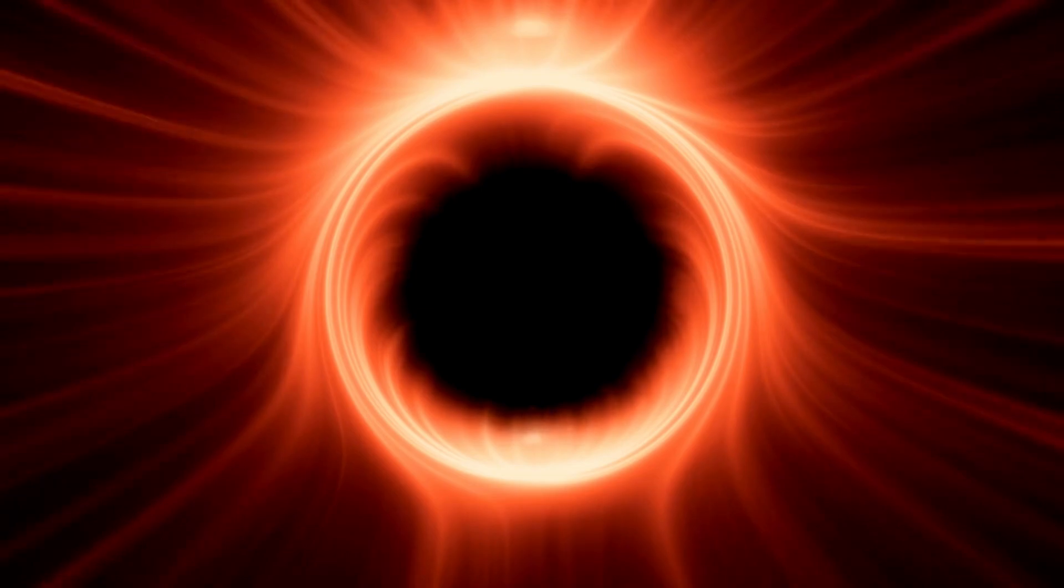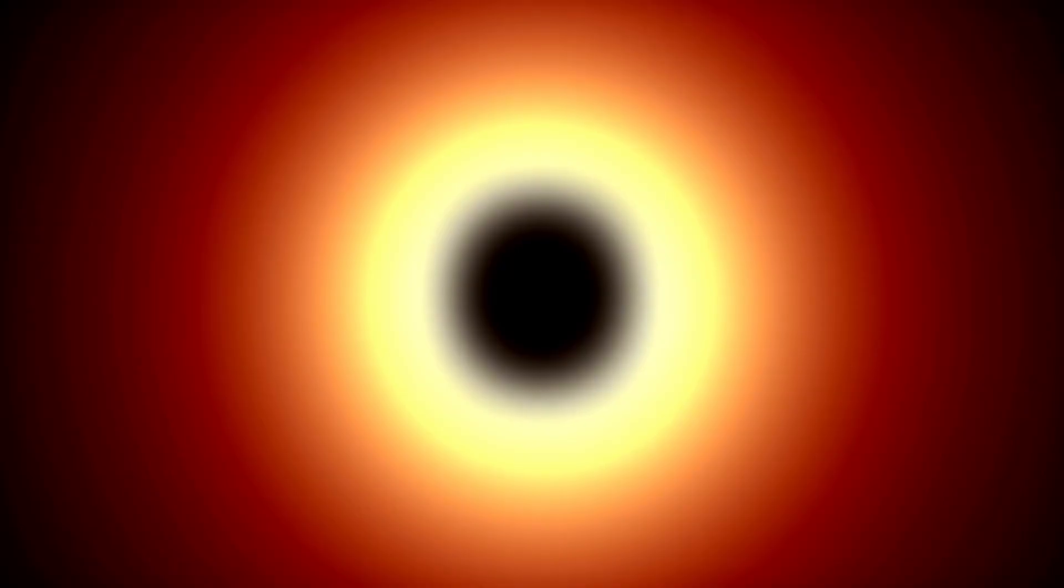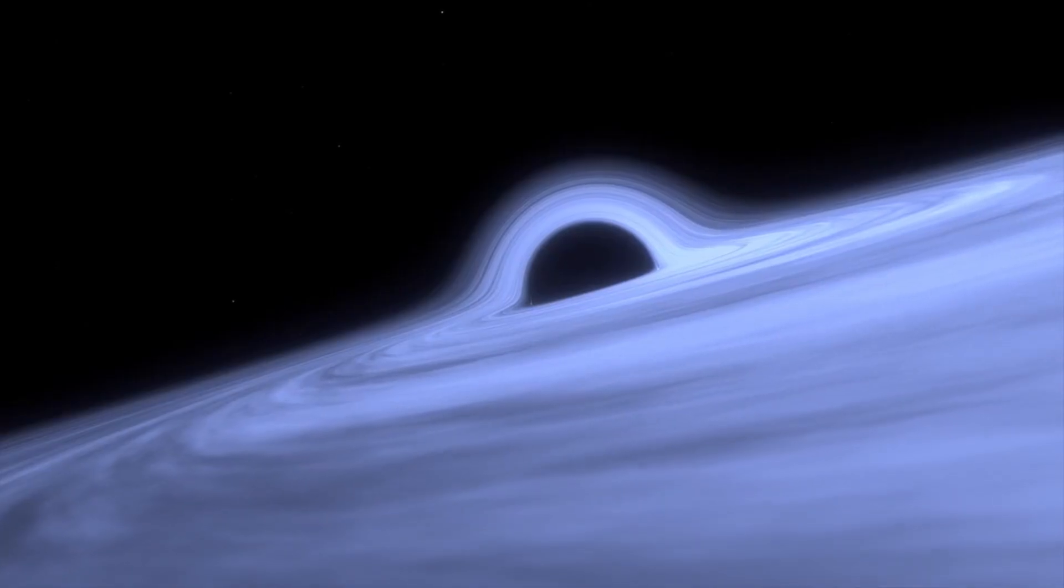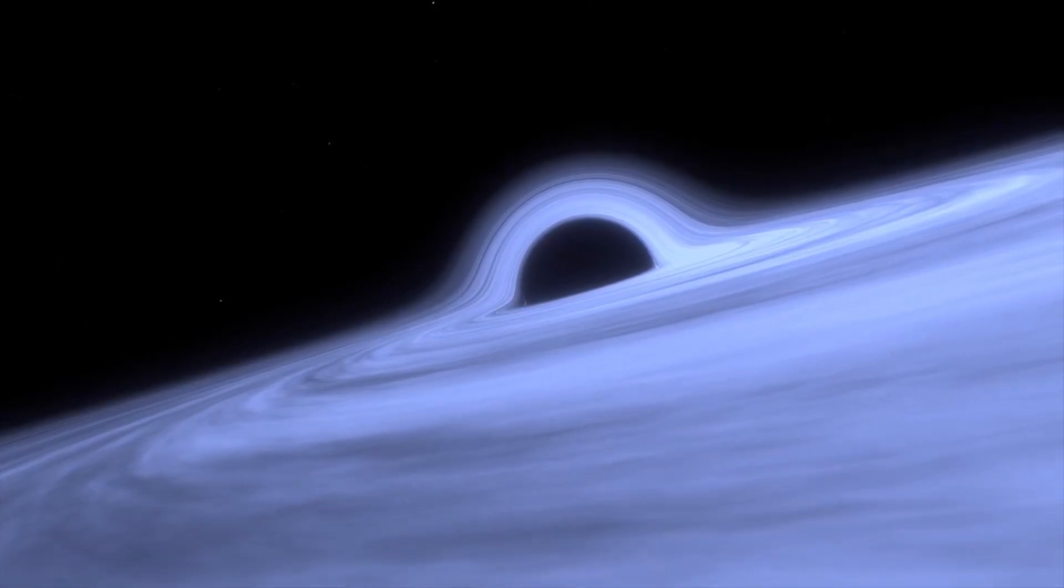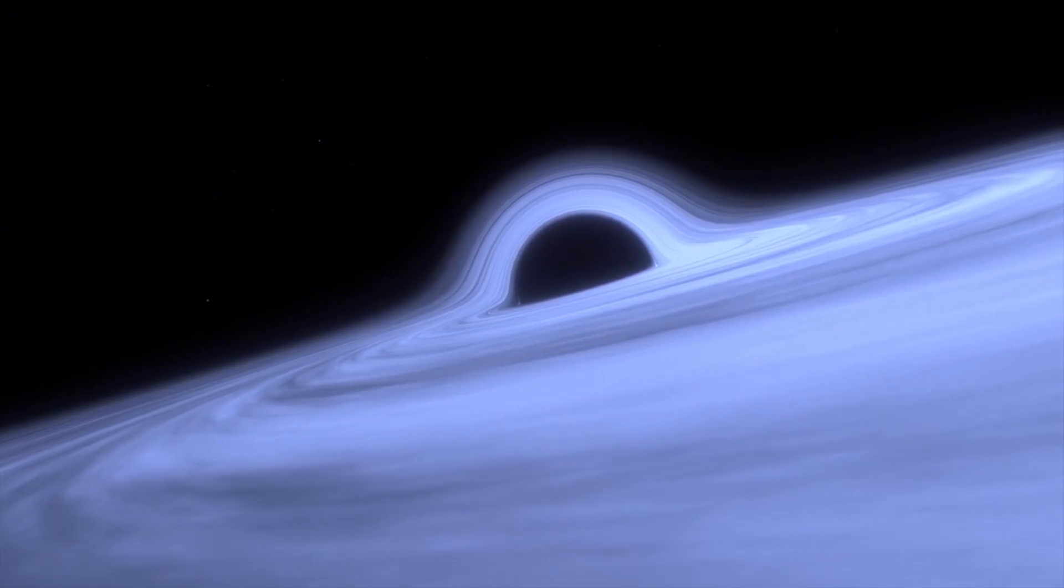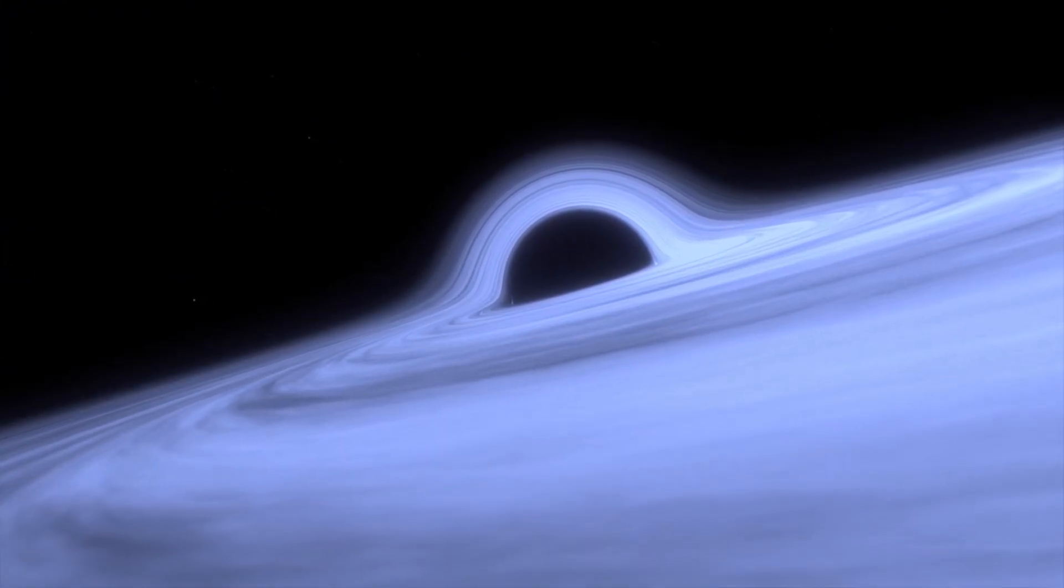As these mighty stars collapse, something strange occurs near their surfaces. Time itself starts to play tricks. From the perspective of someone far away, time appears to slow down near the event horizon, the point of no return for anything falling into a black hole. It's like the star's clock ticks at a different pace compared to ours.